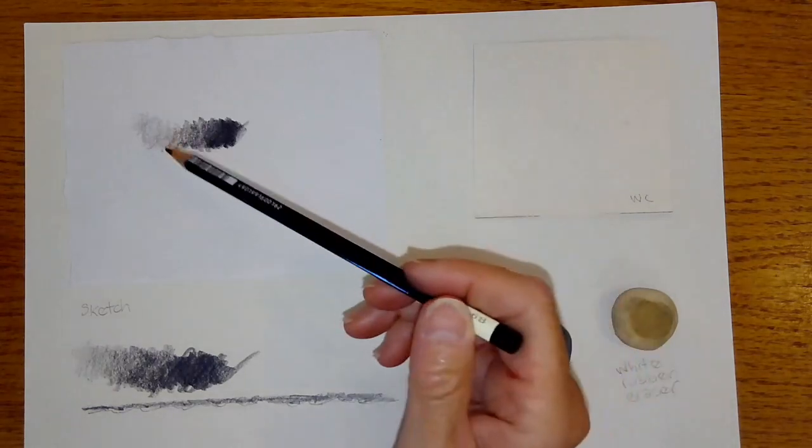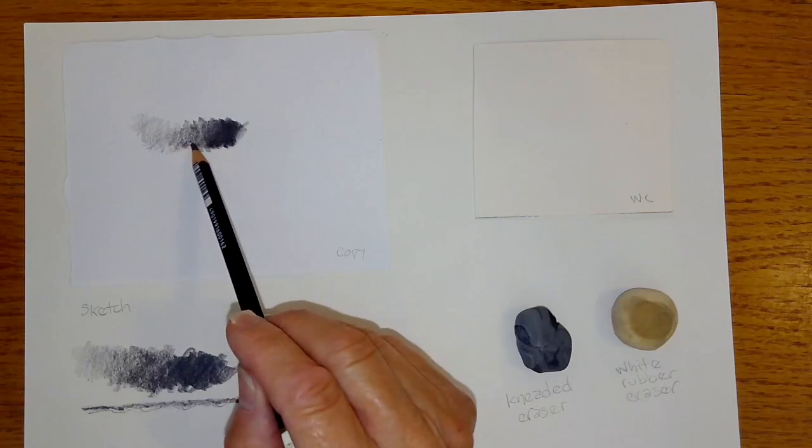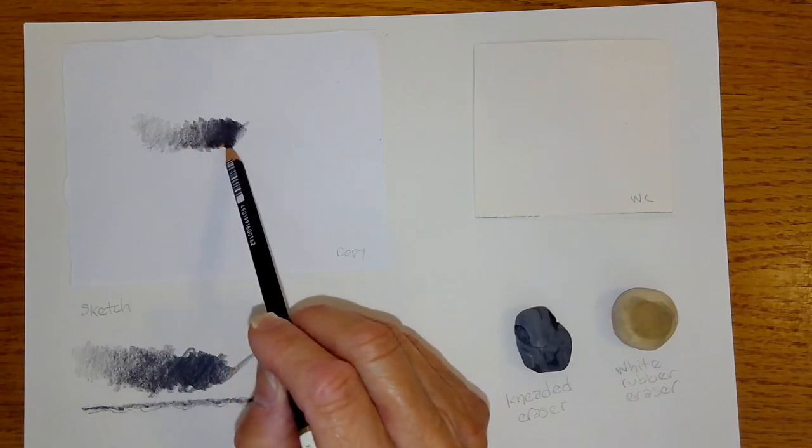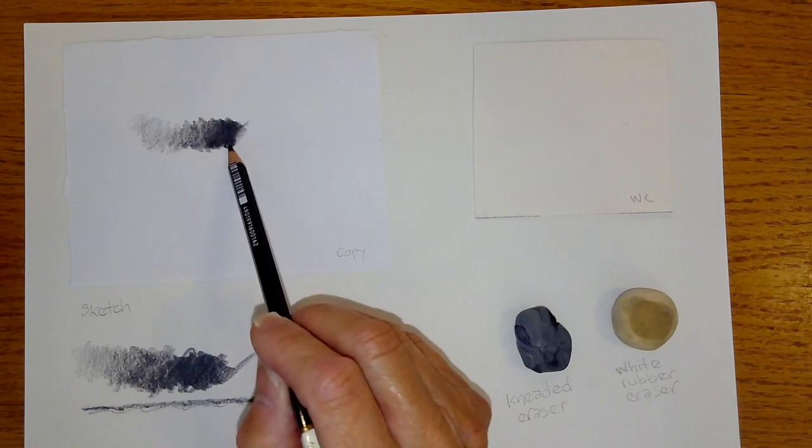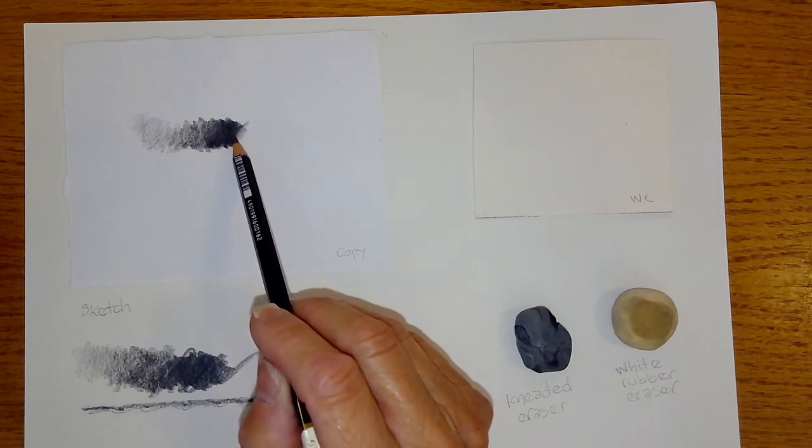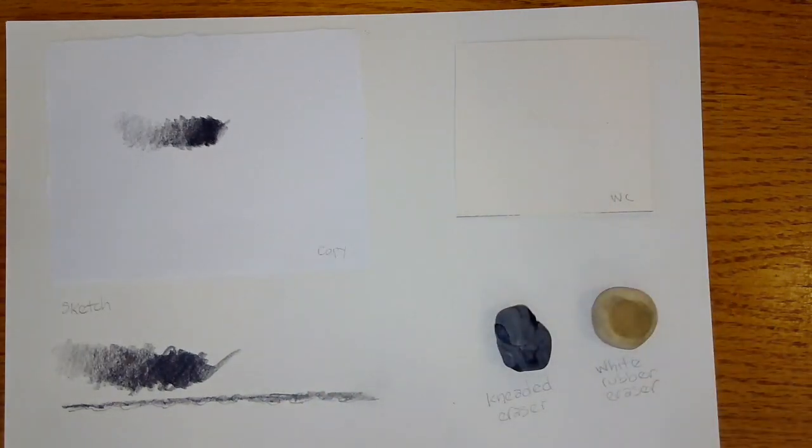So just a quick comparison, we still have some texture happening here. You can actually see it more in this middle value, and then it kind of disappears pretty quickly here by applying more pressure. Moving on to watercolor paper.